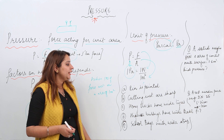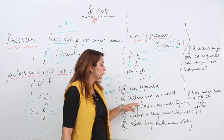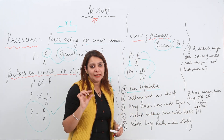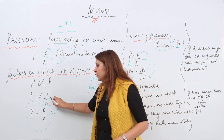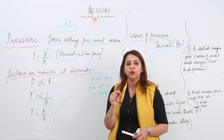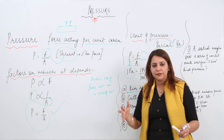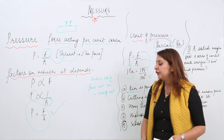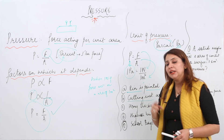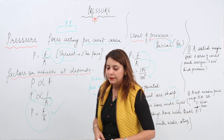Looking at applications: a pin is pointed because being pointed it has a very small area. Less area means more pressure, which is why the pin can pass through a cloth. Similarly, cutting instruments like knives are sharp — sharp means less area, which results in more pressure, allowing you to peel vegetables more easily.